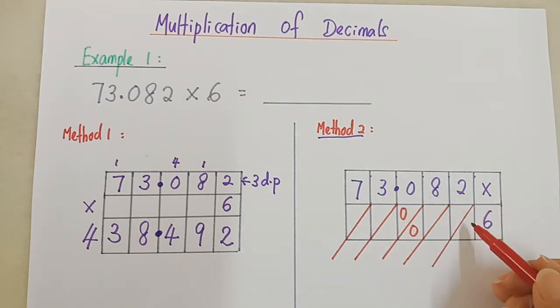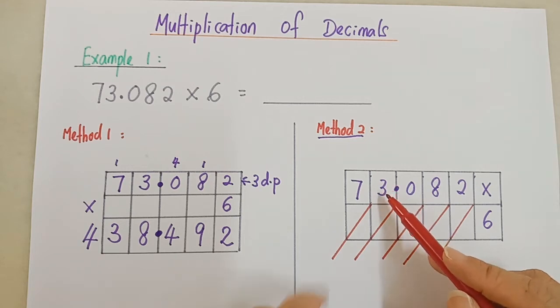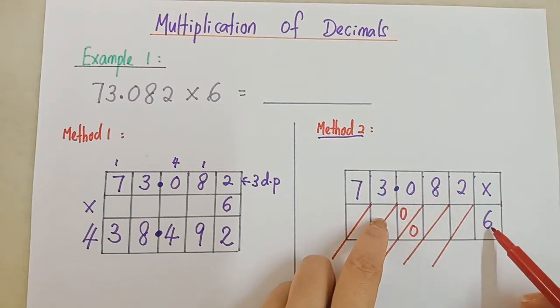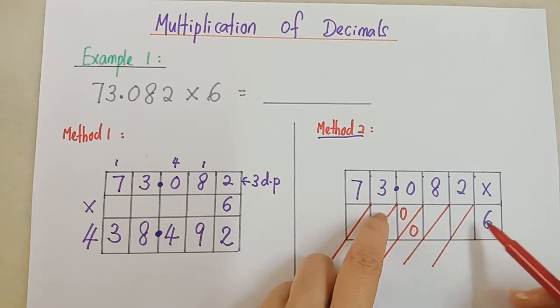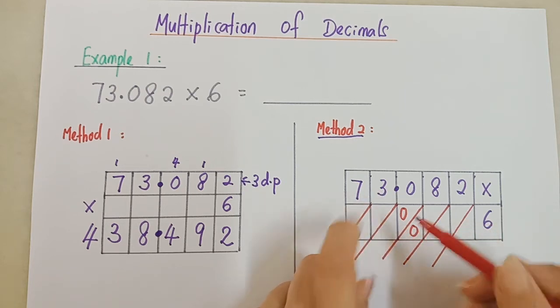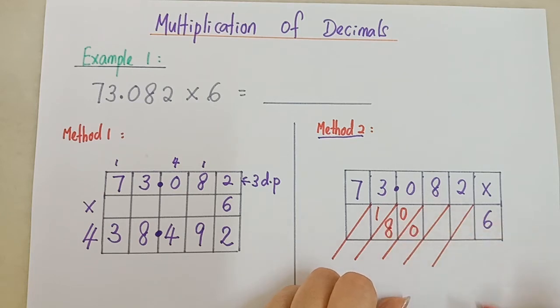Let's say I want to time with this one. 3 times 6 is 18, right? 3 times 6, 18. So you write 1, 8. Let's say now I want to do this one. 2 times 6 is 12. 1, 2.